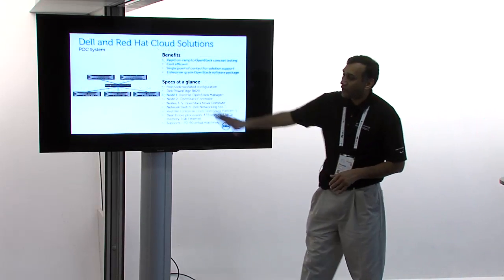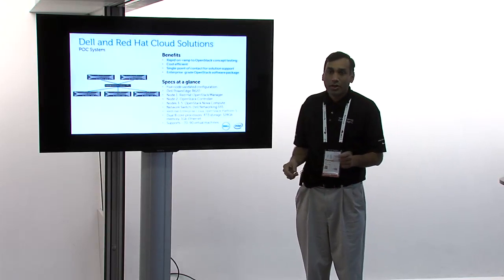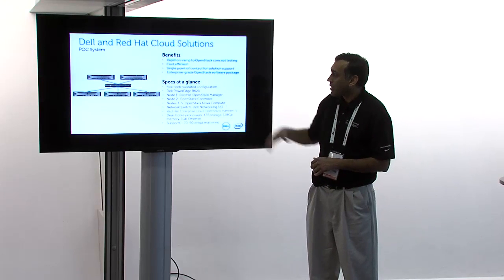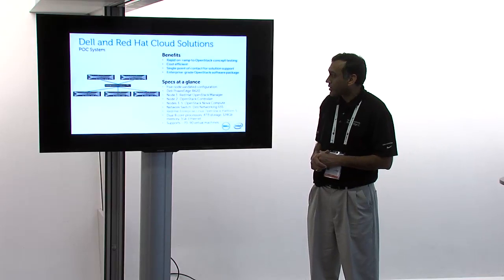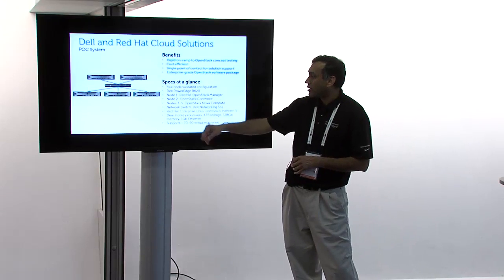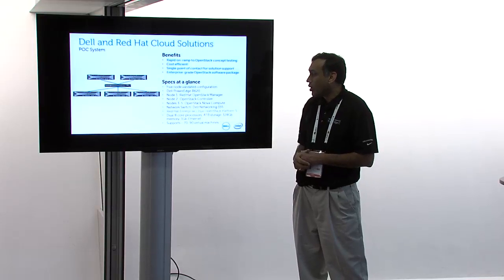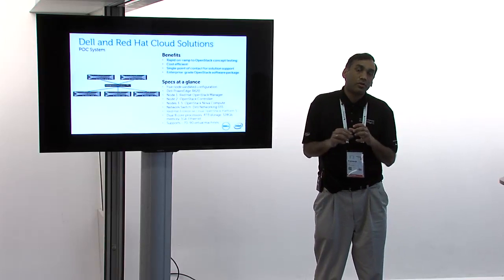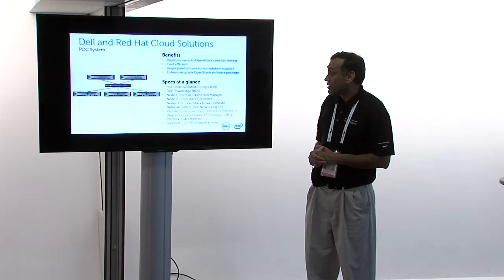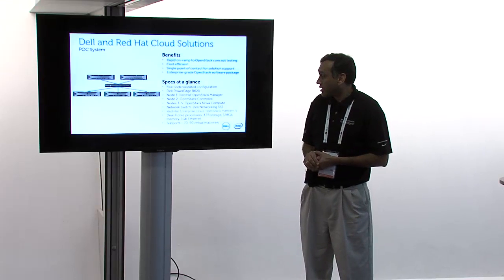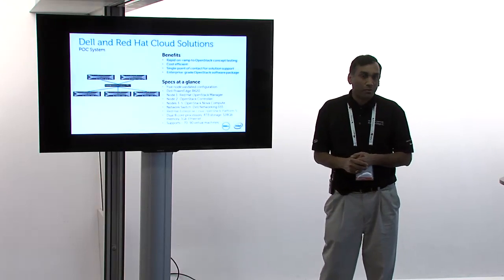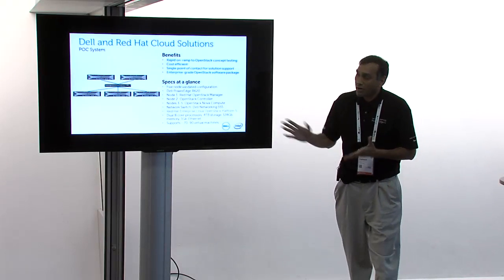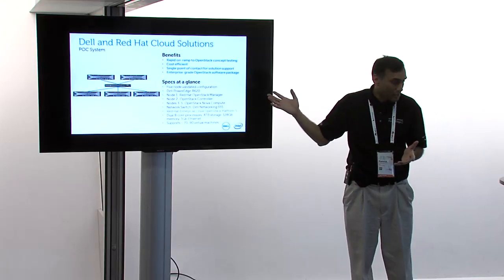The POC solution is just five servers and a single switch — it gets you going very quickly at very low cost. It's a rapid on-ramp using PowerEdge R620 series servers: five nodes with an OpenStack manager, an OpenStack controller, three Nova compute nodes, and storage on the controller node. You can try LVM storage, get up to 90 virtual machines and four terabytes of storage. It's great for bringing an application workload to try out OpenStack — a great low-cost starter kit.